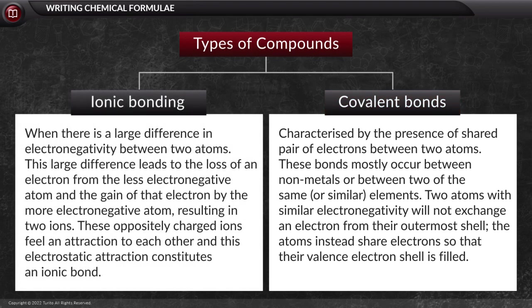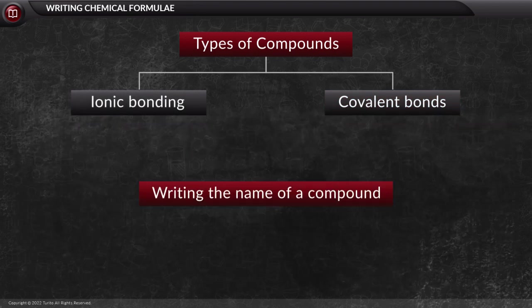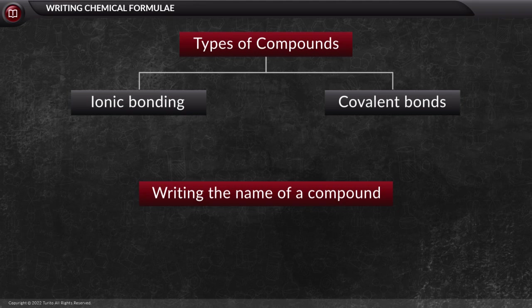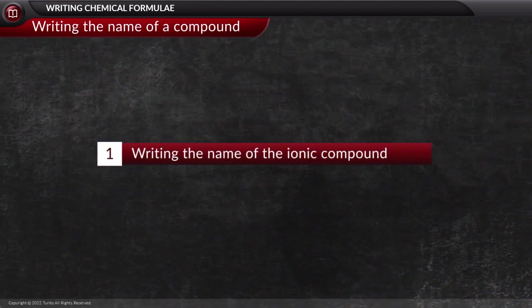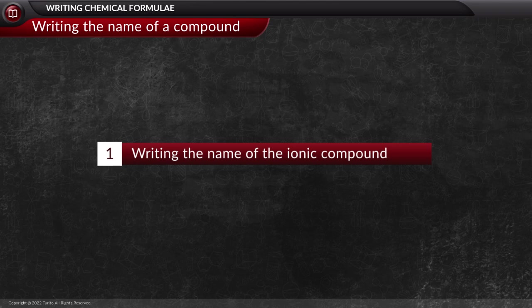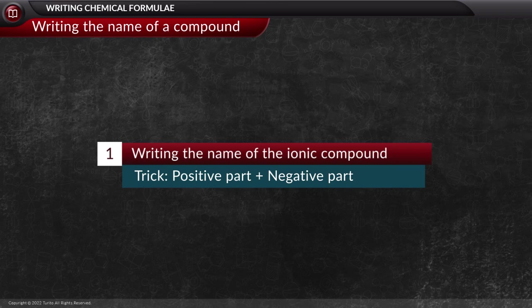After revising the types of compounds, let us see how to write the name of different compounds. The first is naming an ionic compound. For naming the ionic compound, the trick is to club the positive part named with the negative part.